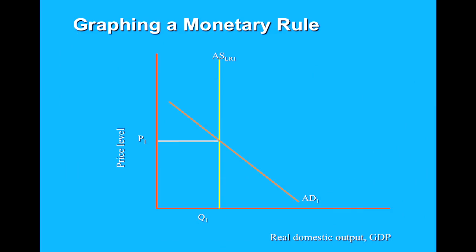This figure helps illustrate the rationale for a monetary rule. Here, we assume that the economy is operating at a full-employment real output of Q1. We also assume that the nation's long-run aggregate supply curve shifts rightward each year, as from ASLR1 to ASLR2, depicting the average annual potential increase in real output. The monetarist monetary rule would tie increases in the money supply to the typical rightward shift of long-run aggregate supply. This would ensure that the AD curve shifts rightward, as from AD1 to AD2 each year. As a result, real GDP would rise from Q1 to Q2, and the price level would remain constant at P1. In this view, a monetary rule would promote steady growth of real output along with price stability.